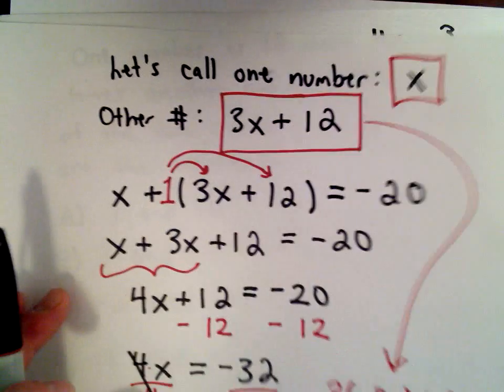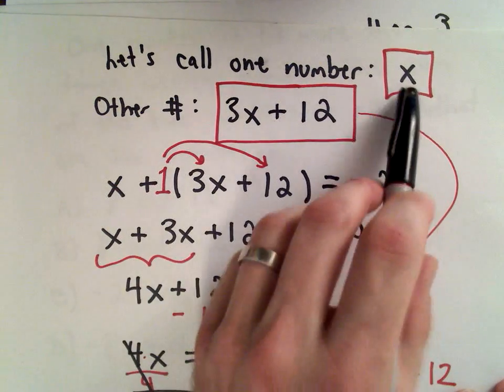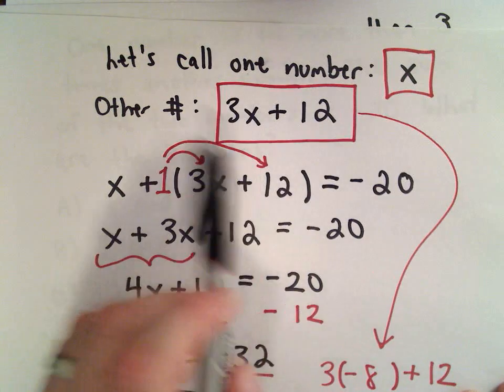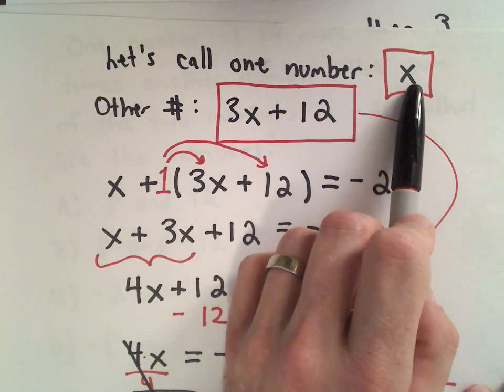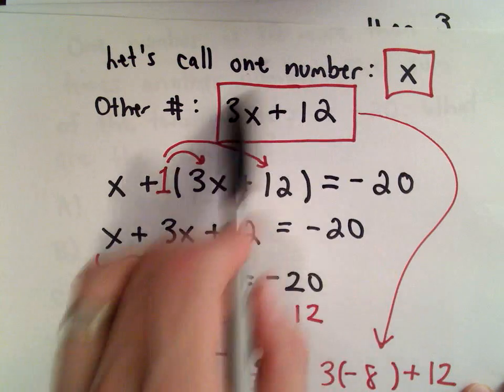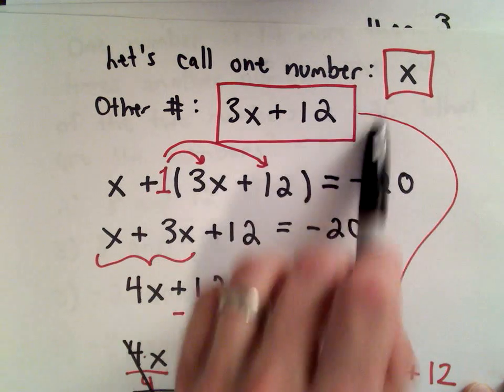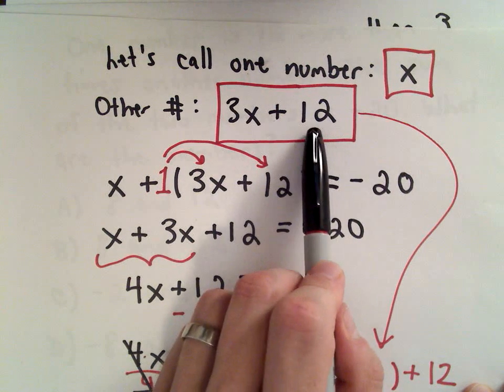That would be the algebra way—and this is kind of the complicated part. One number, okay, let's call it x, no problem. But coming up with a second statement—I think that's the more tricky part of the problem, is coming up with that part.